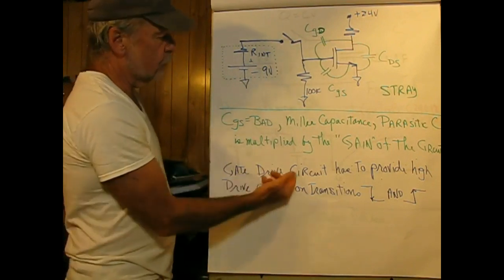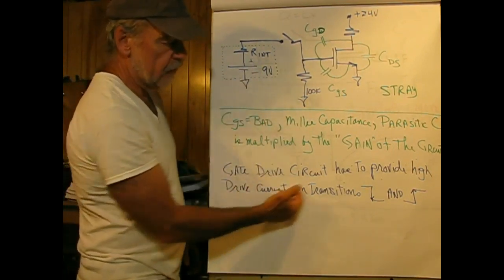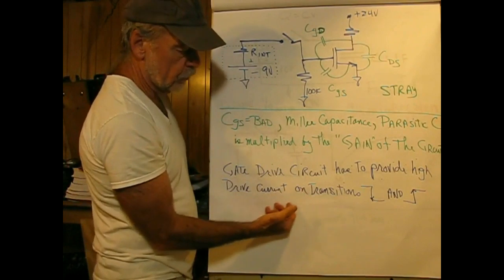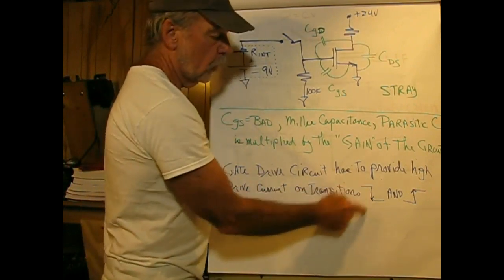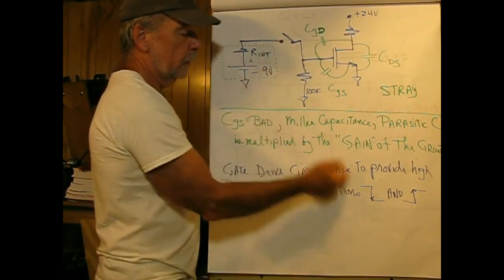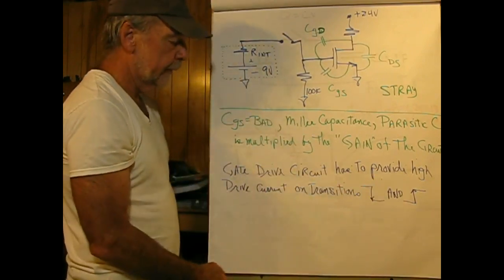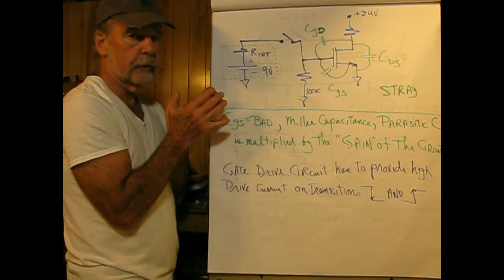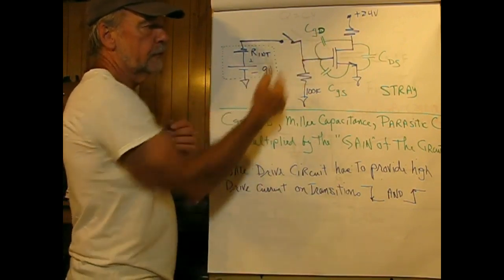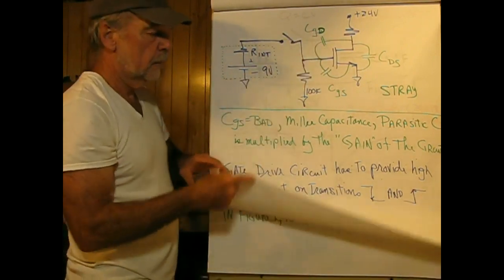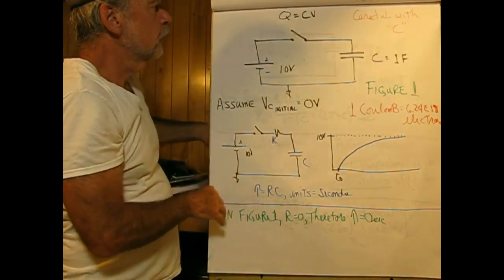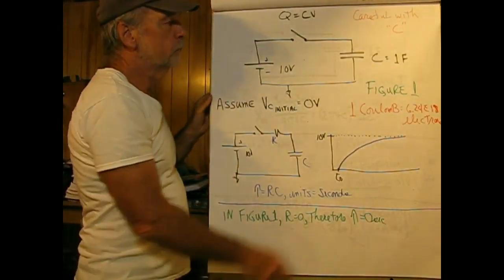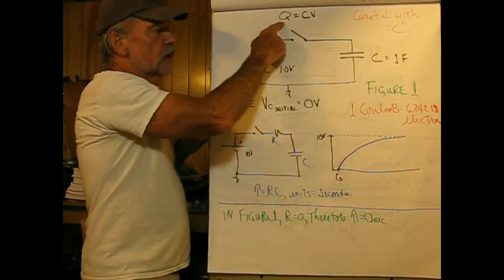What this means is that the gate drive has to provide high drive currents on transitions—that is, when we go high to low and low to high. So when we're switching the FET, it's up to the driver circuitry to be able to deal with charging this capacitor.